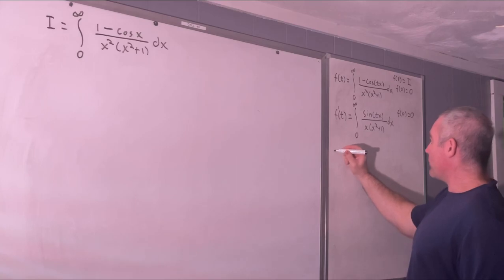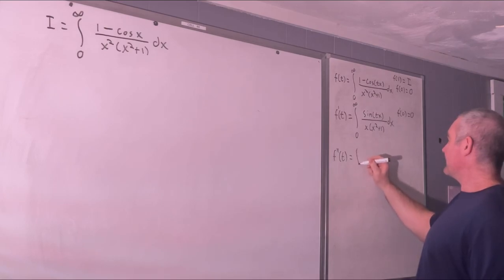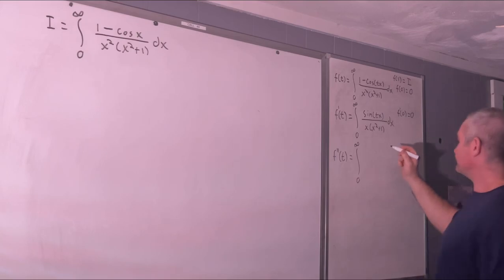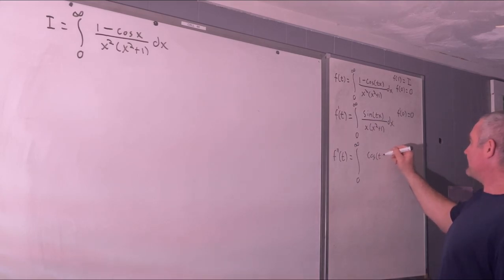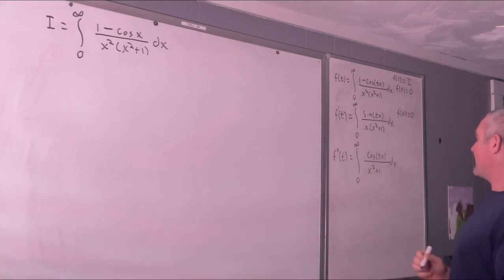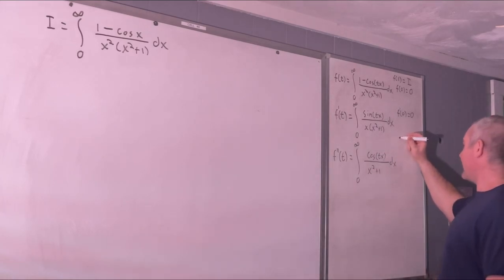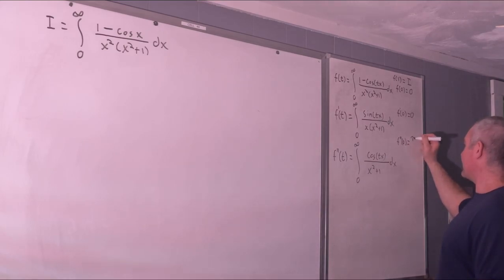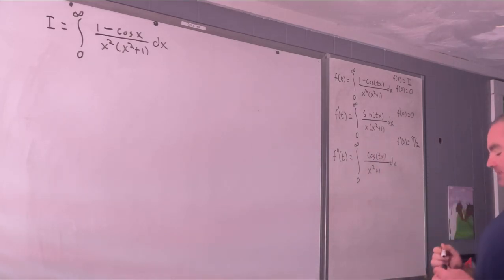We're going to go one more time. f''(t) equals the integral from 0 to infinity of cosine(tx)/(x² + 1) dx. The derivative of sine is cosine, and we cancel one of the x's. We note that f''(0) is going to give us π/2, since the integral from 0 to infinity of 1/(x² + 1) dx equals π/2.